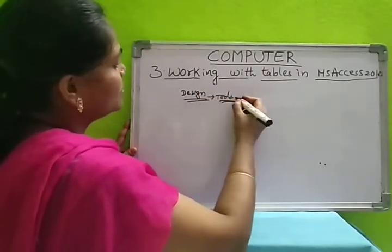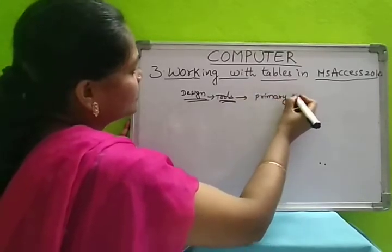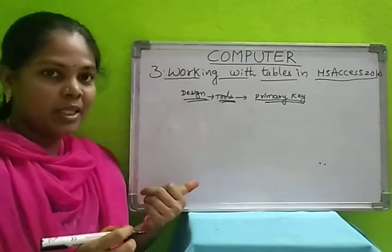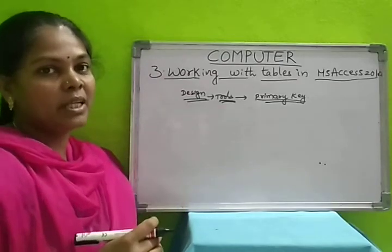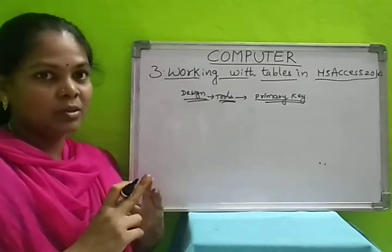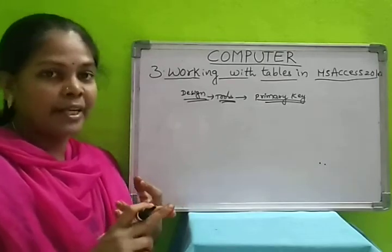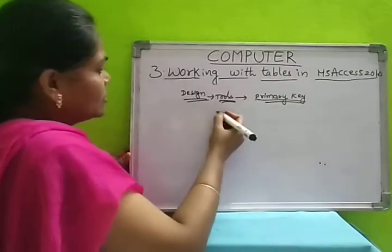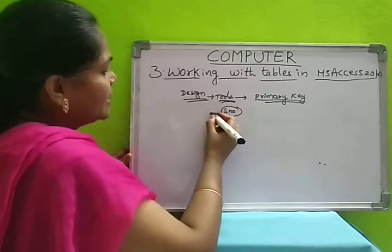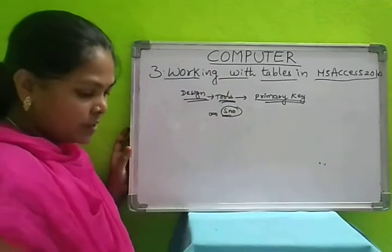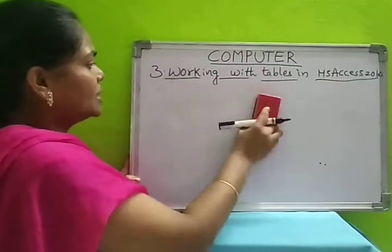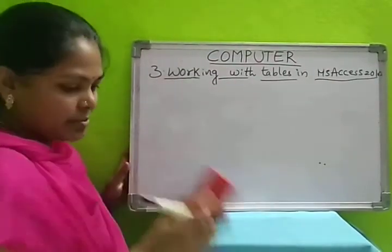In the tools bar, select the primary key. The primary key is nothing but the unique column name — whatever the unique column name, that you have to select as the primary key. Last class we learned: a primary key is a unique column whose values are unique and which doesn't have null values. The value must be entered for the primary key field.